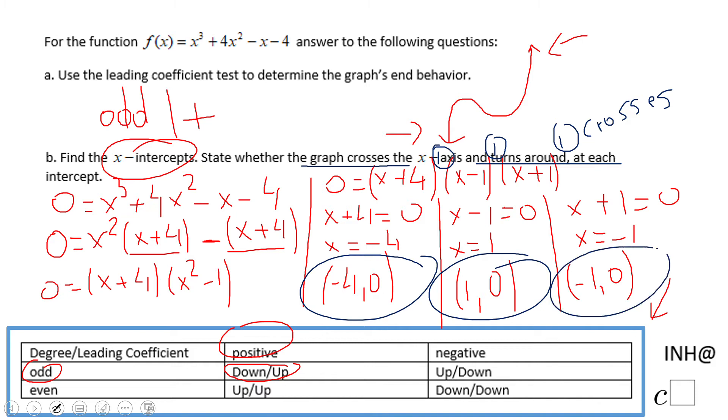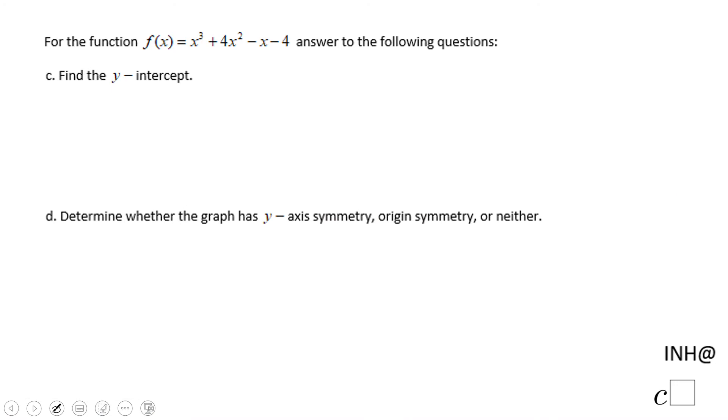Now we can go to part C and D. On part C we are asked for the y-intercept. For that reason we're going to make x = 0. In this case, f(0) is very simple. This is 0, this is 0, this is 0, we end up with -4. The y-intercept is (0, -4).